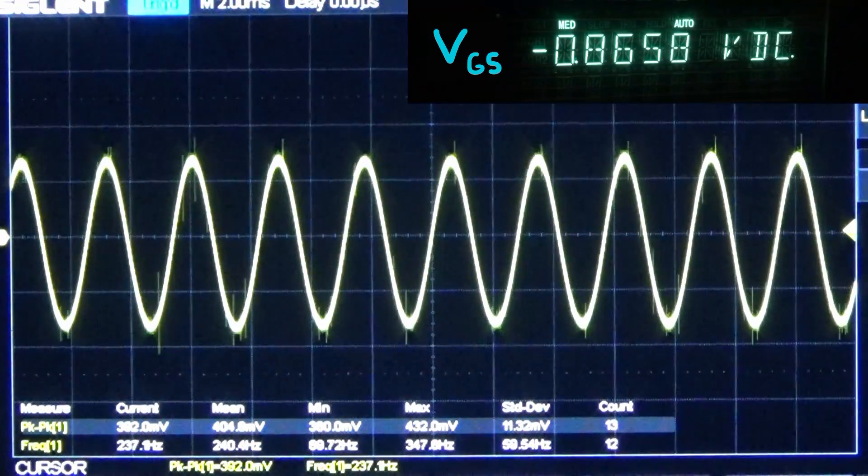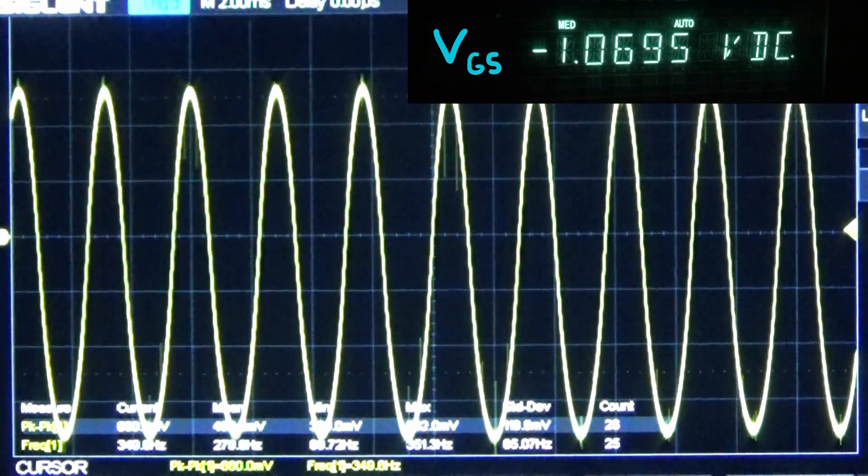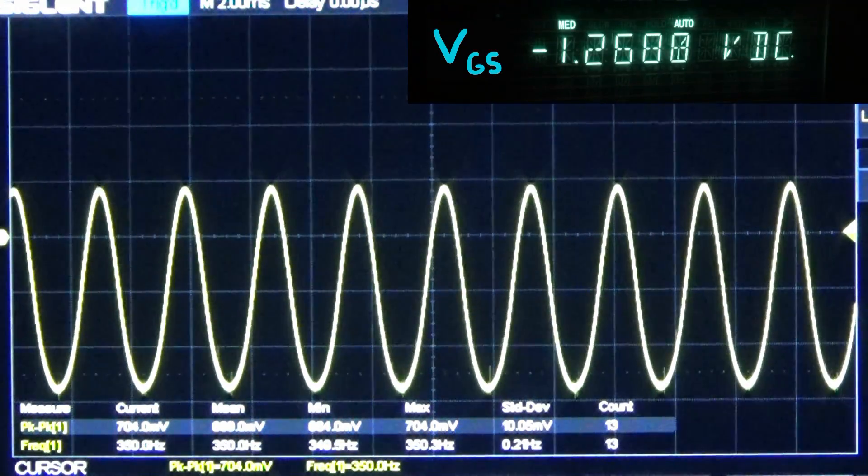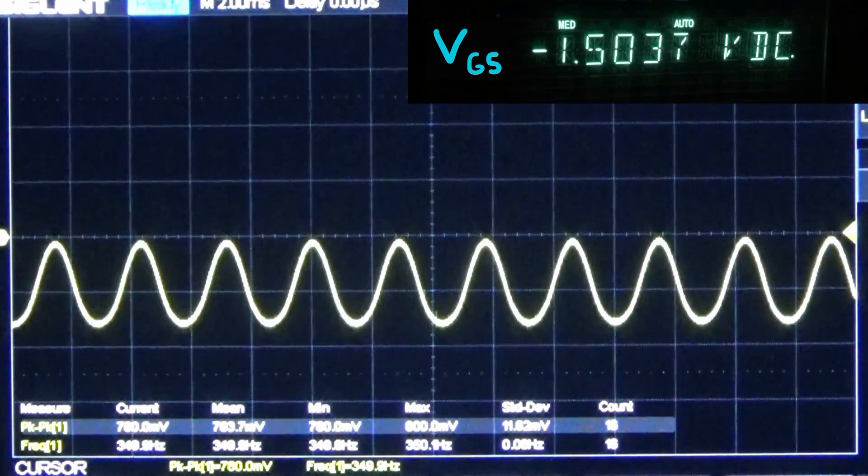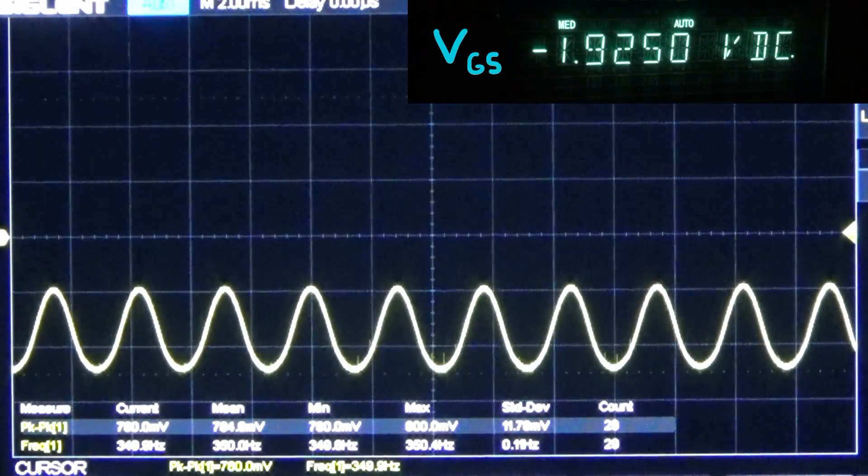We reach a maximum of about 700 millivolts peak to peak. At a certain gate to source voltage, we see we are no longer linearly related. This JFET is no longer acting as a resistor.